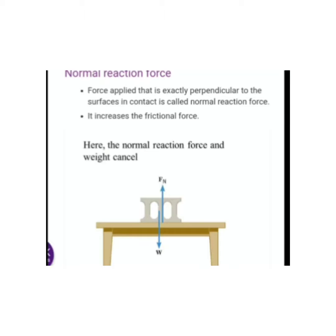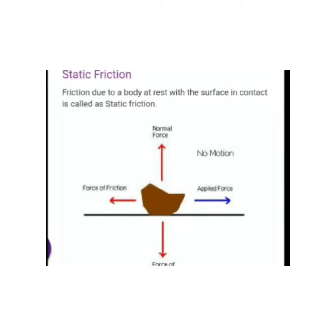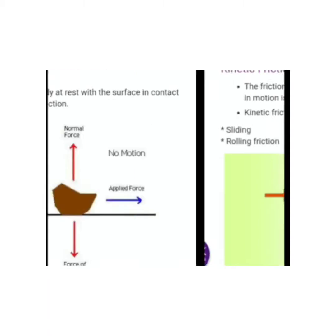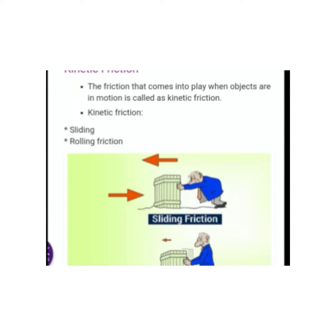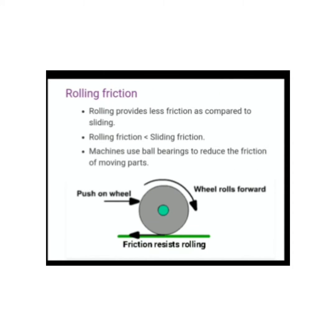In a simple way, just write the points in your copy and go through them. Now, what is static friction? Friction due to a body at rest on the surface in contact is called static friction. What is kinetic friction? The friction that comes into play when objects are in motion is called kinetic friction. What is rolling friction? Rolling provides less friction compared to sliding, because the wheel rolls rather than slides, so there is less friction compared to sliding kinetic or static friction.